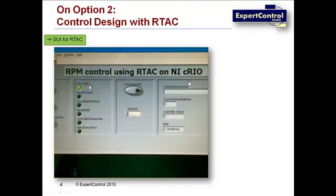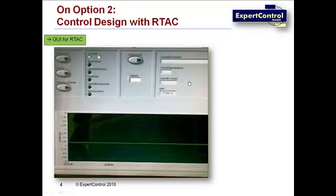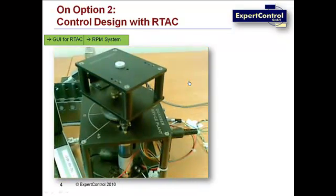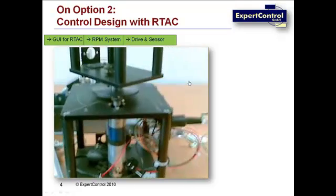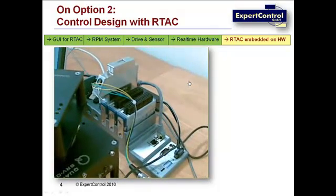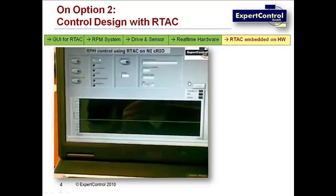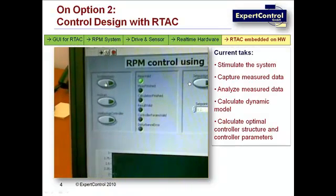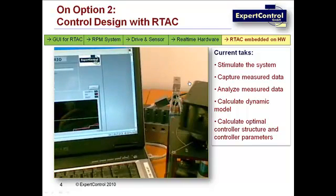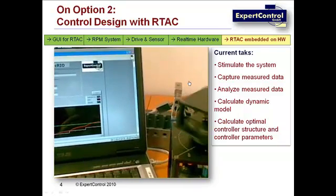Now let's have a closer look at option number two — control design with ARTEC. This is a short video of a system setup with ARTEC. Here you can see the GUI for ARTEC running on a standard Windows PC. The plant to be controlled is a rotary system; the actuator is a DC drive and the sensor detects the RPM. A real-time hardware with suitable I/O captures the measured data and provides processing power for the adaptive controller ARTEC. ARTEC autonomously stimulates the system, captures and analyzes the measured data, calculates the model, designs the feedback controller, and runs the control loop.